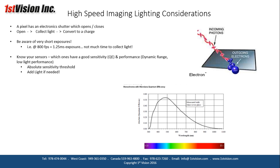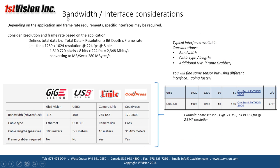Bandwidth and interface considerations are critical. Resolution times bit depth (say 8 bits) times frame rate tells us how much data is coming down. For a 1.2-megapixel camera — 1280x1024 — running at 224 frames at 8 bits, that's about 280 megabytes per second. That data has to go through an interface to the computer. Common interfaces include GigE, USB 3, CameraLink, and CoaXPress — each with increasing bandwidth from left to right, allowing higher speeds from the same sensor.